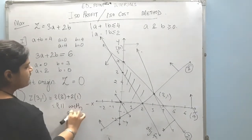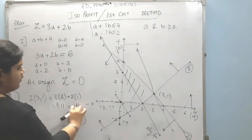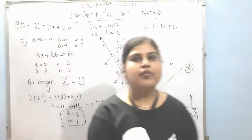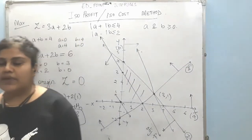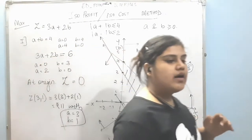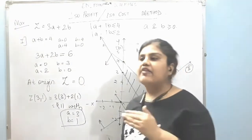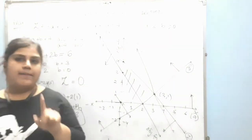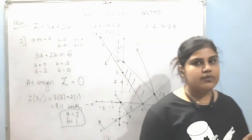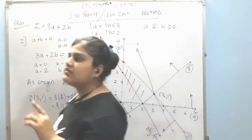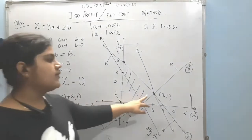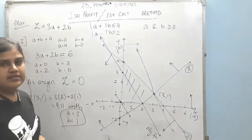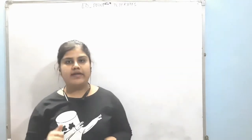So this is known as the isoprofit method or isocost method, and it is similar to the graphical method. In this method we take a line parallel to the objective function and move it away from the origin in the case of maximization, or towards the origin in the case of minimization. This is a very easy method of solving and we can easily find our optimum solution.